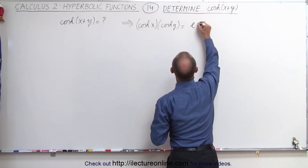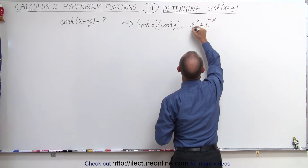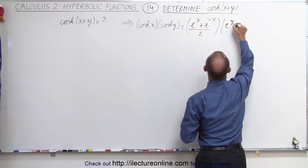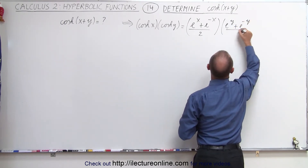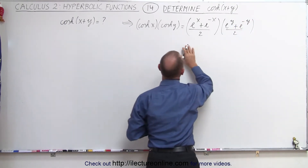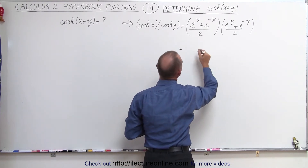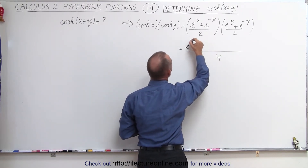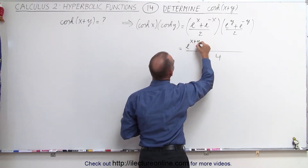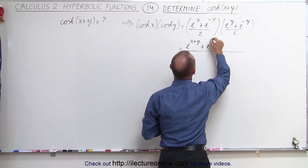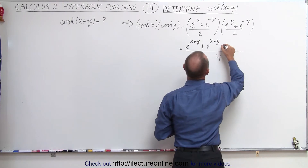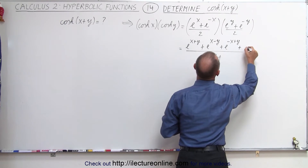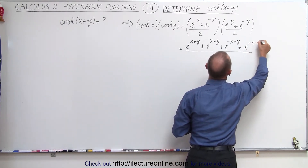So here we end up with e to the x plus e to the minus x, divided by 2, and we multiply that times e to the y plus e to the minus y, divided by 2. When we do that, in the denominator we're going to get 4, so we divide by 4. In the numerator we get 4 terms: e to the x plus y, plus e to the x minus y, plus e to the minus x plus y, and e to the minus x minus y.